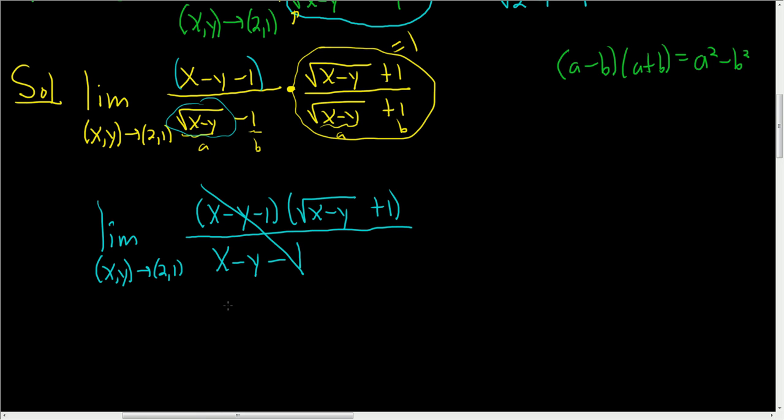We get the beautiful cancellation. So this is the limit as x, y approaches 2, 1. And we're left with the square root of x minus y plus 1.